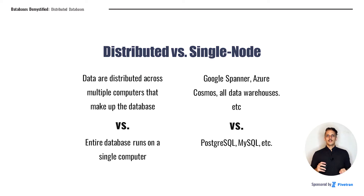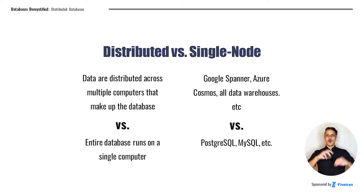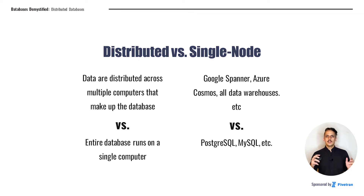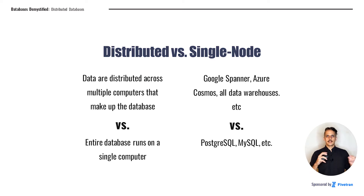Distributed databases you may have heard of include Google Spanner and Azure Cosmos, as well as all of the big data warehouses like Redshift, Snowflake, and BigQuery. Single node databases are the classic databases like PostgreSQL, MySQL, SQLite, as well as many others.